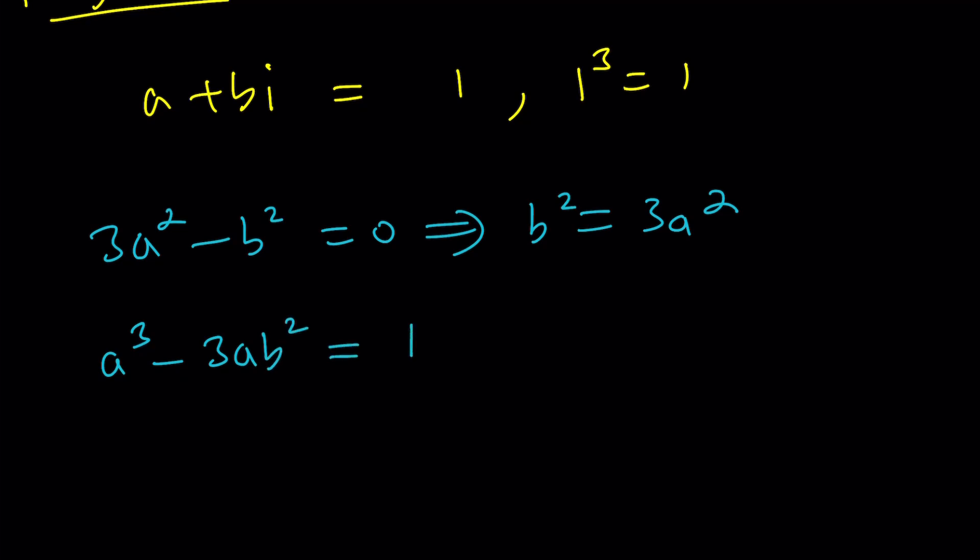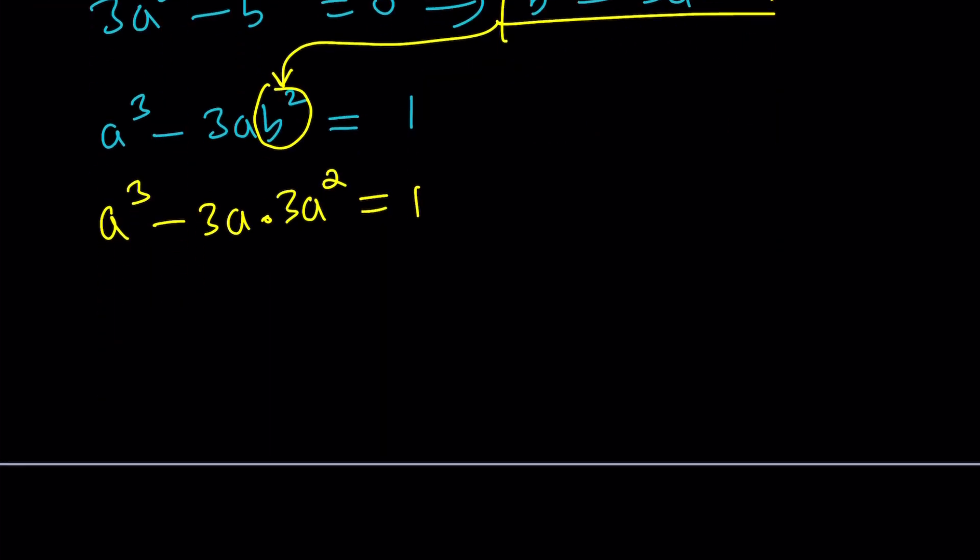a cubed minus 3ab squared is equal to 1. And we do know that b squared is equal to 3a squared. There is no better way to do it than plugging it in directly. Let's go ahead and plug it in. a cubed minus 3a times b squared, which is 3a squared equals 1. This is a cubed minus 9a cubed, which is negative 8a cubed equals 1.